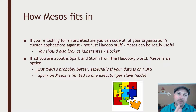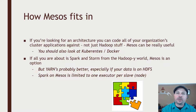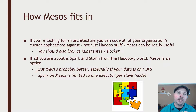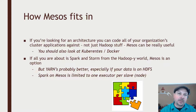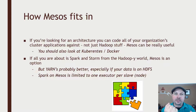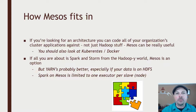Another thing is that Spark on Mesos is limited to one executor per slave, so every machine can only run one executor from Spark. Whereas with Yarn, it can actually run multiple executors per node. So in many cases, Spark on Yarn can be more efficient than on Mesos, even though Spark was originally built for Mesos.